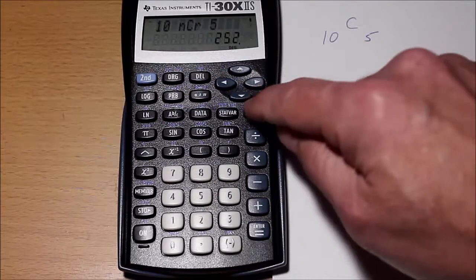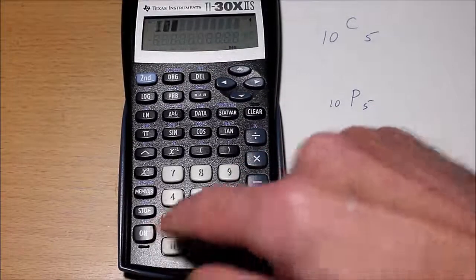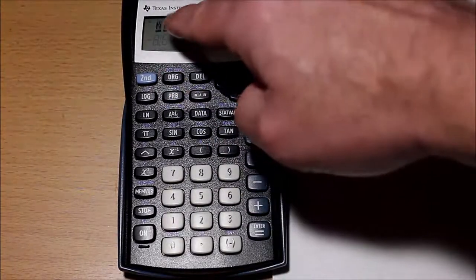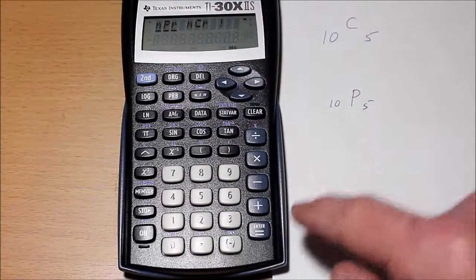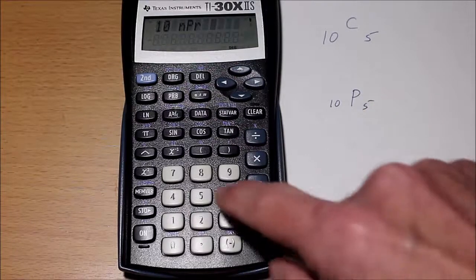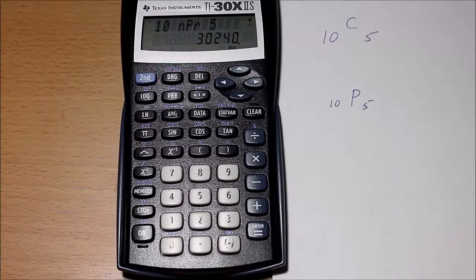Alright, now let's look at the permutation. It's done pretty much the same way. You're going to type in 10, and then the PRB button, and then see the line's already under nPr. So you hit the equal sign, and then you type in the 5, and hit enter, and you get 30,240.